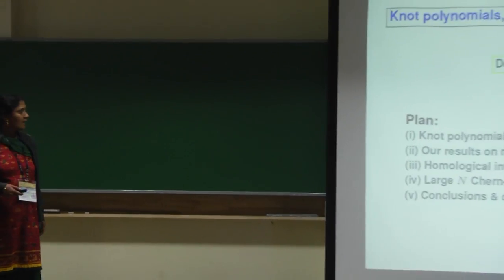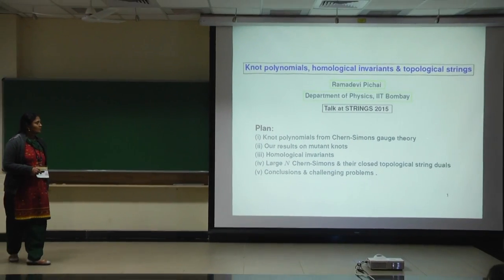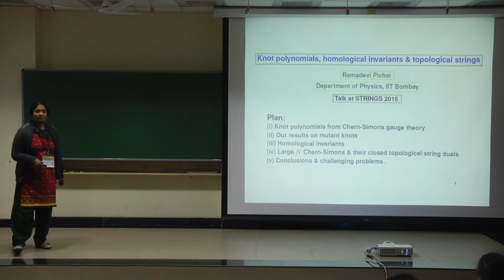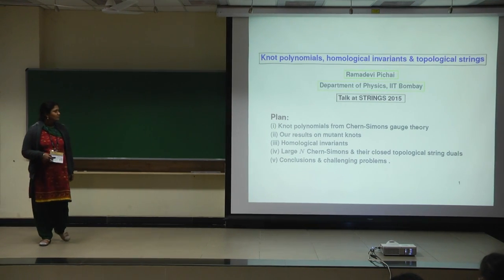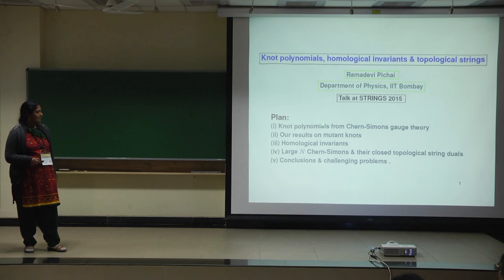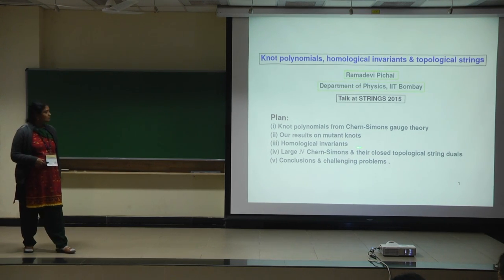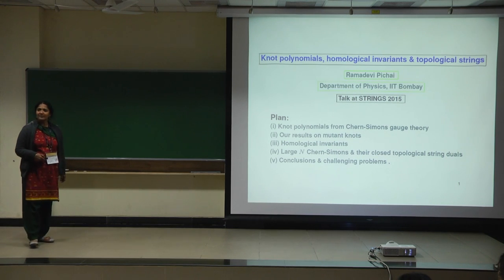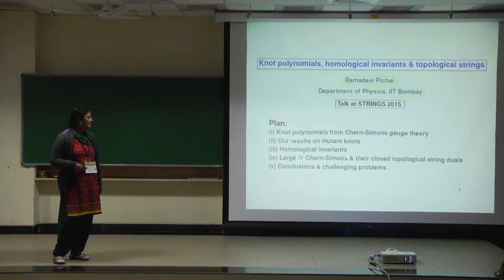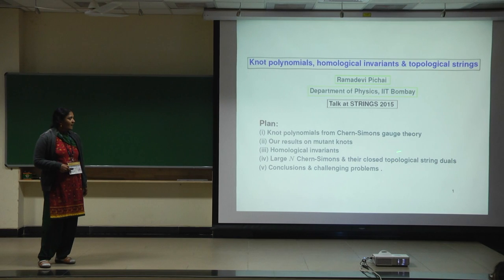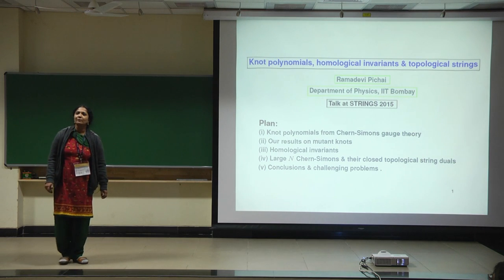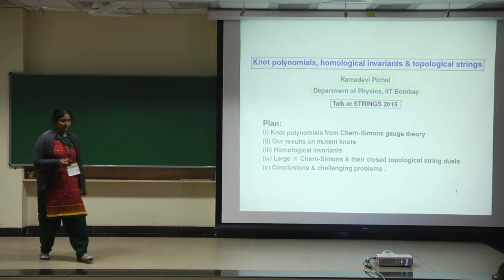The plan of my talk: I will briefly tell you about knot polynomials from gauge theory, and recently in April we had some results on mutant knots. I will explain what a mutant is, and then the various developments in the last 15 years on how to see homology and homological invariants. Then what I have contributed looking at large N and Chern-Simons and closed string topological string duals, and finally a list of open problems.